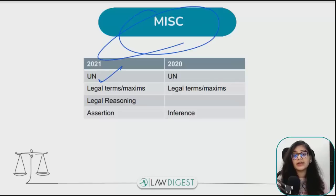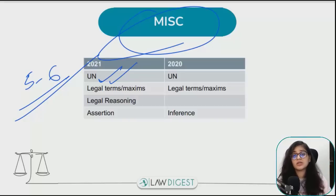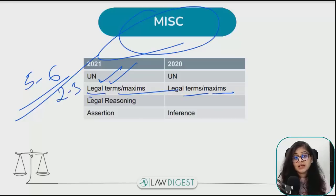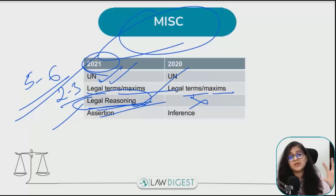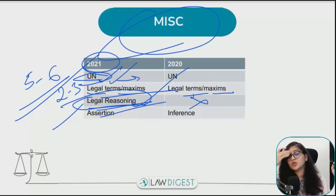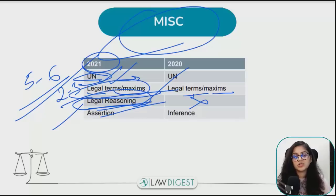Miscellaneous में United Nations बहुत important है - 5-6 questions land up from here। Not just principal organs, subsidiary organs भी important हैं। International organizations जैसे SAARC, BRICS important हैं। UNDP से questions आ जाते हैं। Legal maxims और terms important हैं - 2-3 questions आ जाते हैं। Legal reasoning भी important है - 2019 और 2021 में questions आए। Legal reasoning की videos मैंने YouTube पे cover की हैं - कि questions कैसे solve करते हैं। Assertion-inference related questions भी किसी भी साल आ जाते हैं।